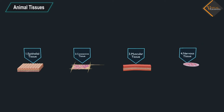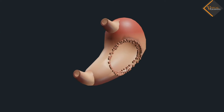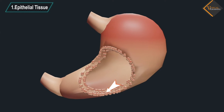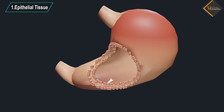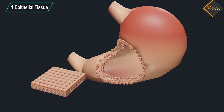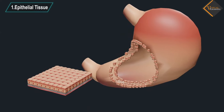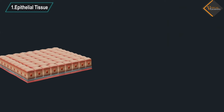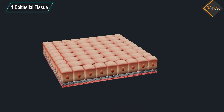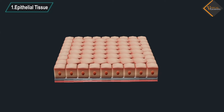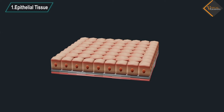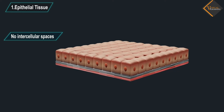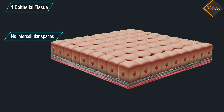Let us understand each type of animal tissue in detail. Epithelial tissue: the covering or protective tissues in the animal body are epithelial tissues. Epithelium covers most organs and cavities within the body. It also forms a barrier to keep different body systems separate. Epithelial tissue cells are tightly packed and form a continuous sheet.